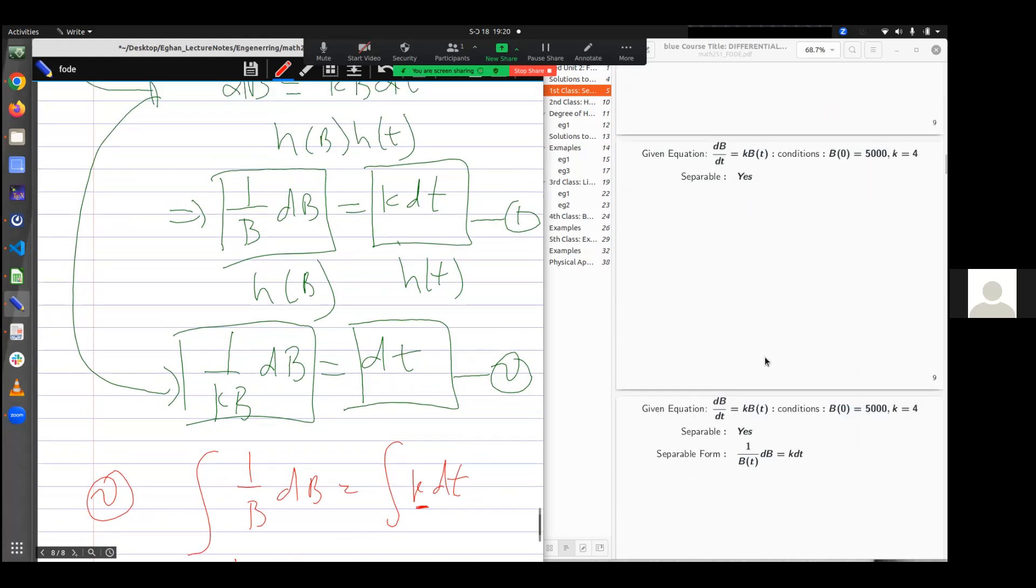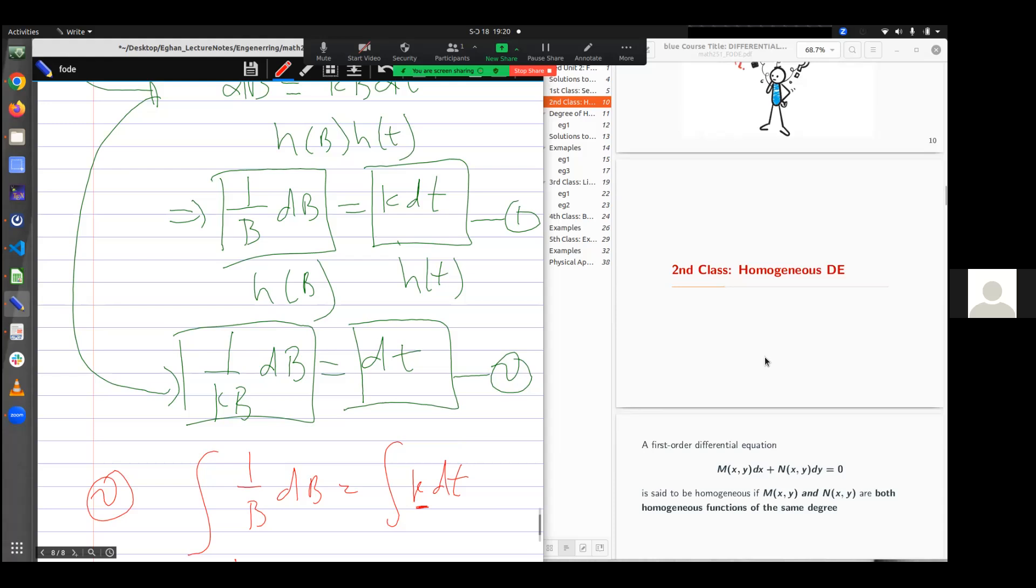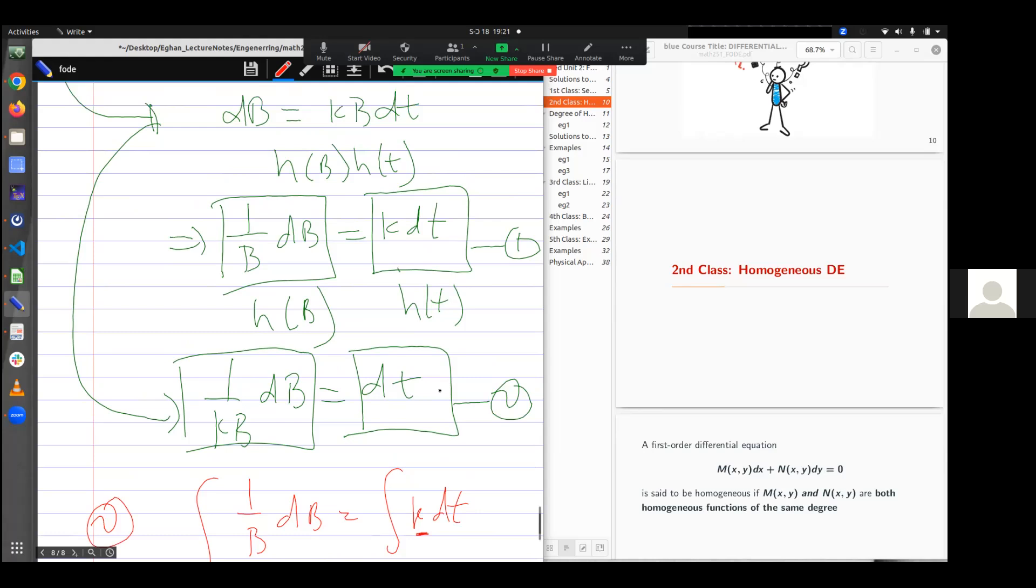So for the last example we did, since it is not separable, this leads us to a second category called homogeneous differential equation. And we'll look at that in the next section.